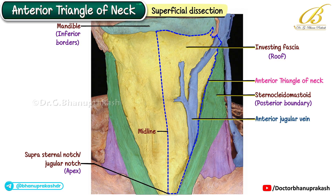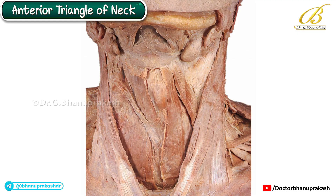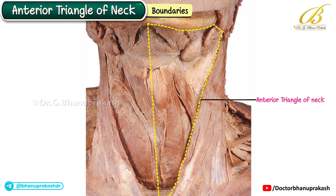Additionally, the origins of the sternal and clavicular heads of the sternocleidomastoid are also visible. This dissection clearly highlights the superficial contents and boundaries of the anterior triangle of the neck.